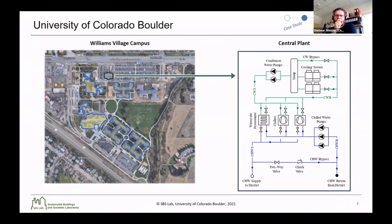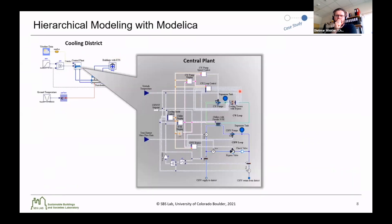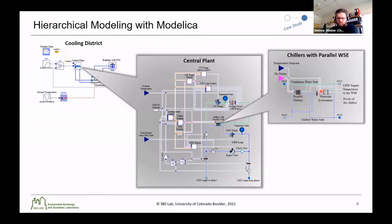This district cooling system was implemented in Modelica. The top-level Modelica diagram shows the model was built hierarchically, allowing each subsystem and building to be tested in isolation and various configurations to be tested as well. At this top level, we have a central plant, a distribution network, and a vectorized set of buildings representing each of the six buildings. Unpacking the central plant, you can see the schematic of the fluid loops with both the condenser water loops and chilled water loops, following a one-to-one relationship with the schematic shown previously. You can also see the two chillers and the waterside economizer in parallel.